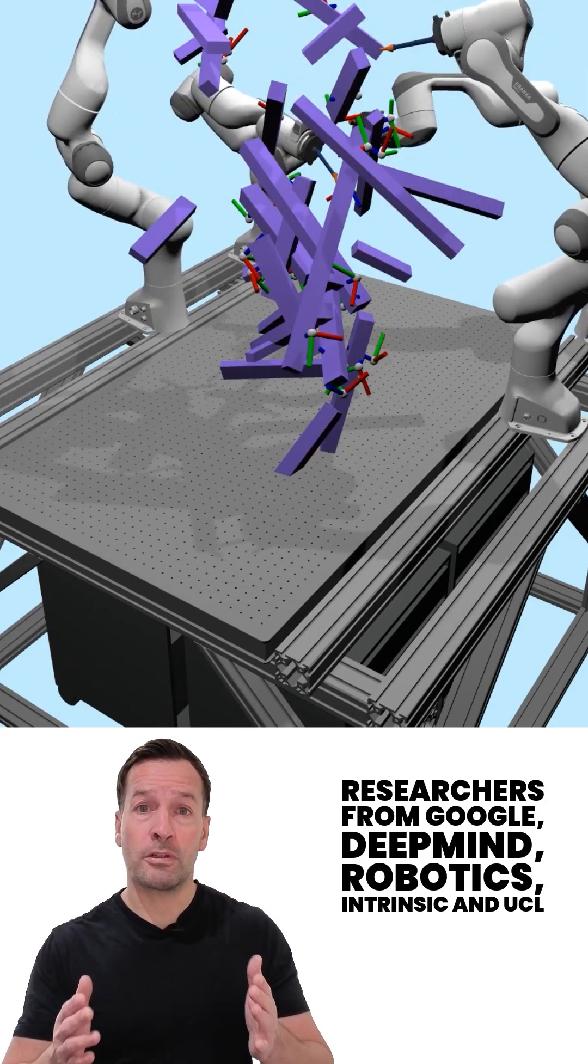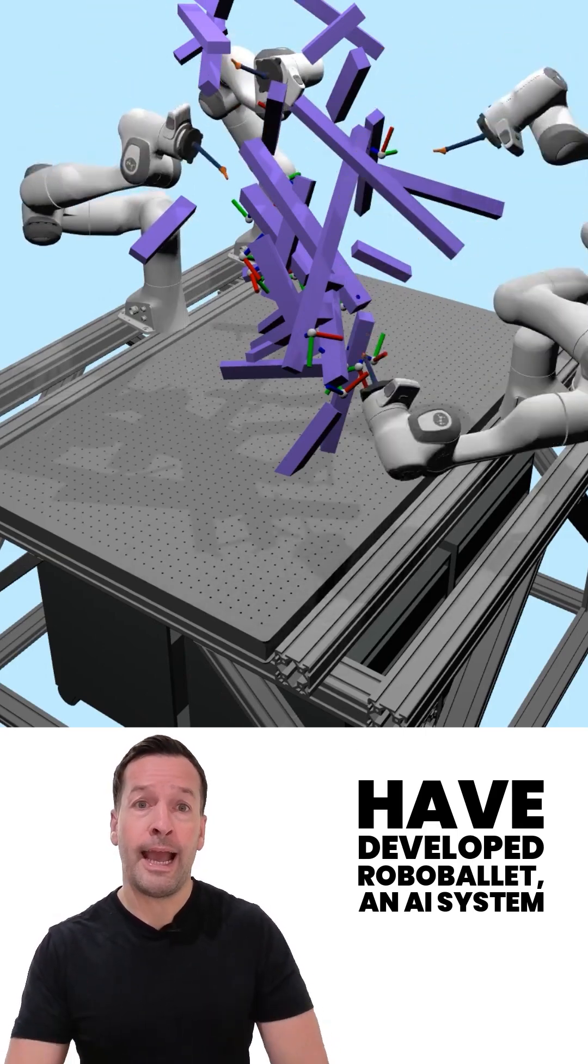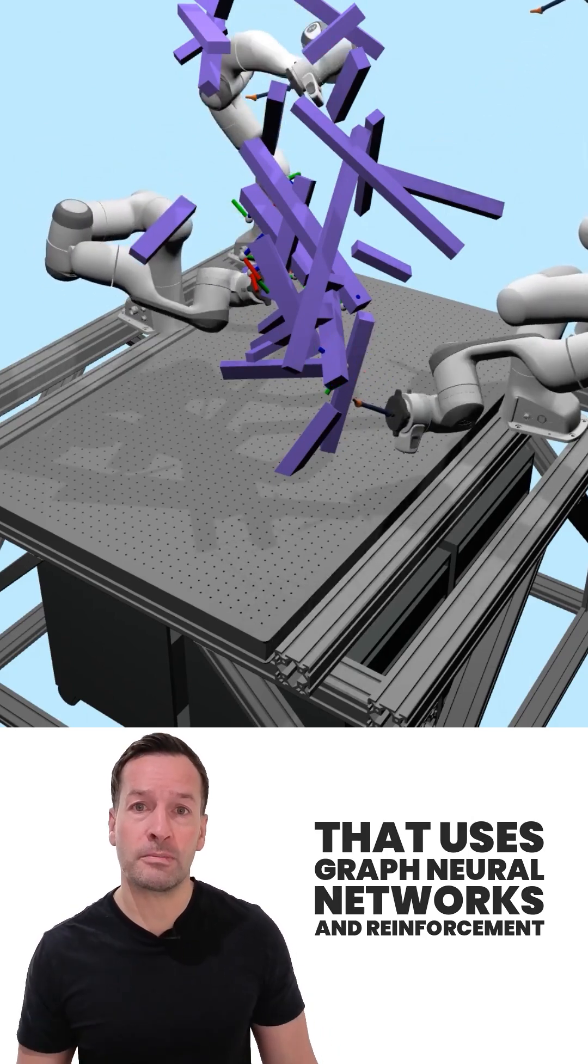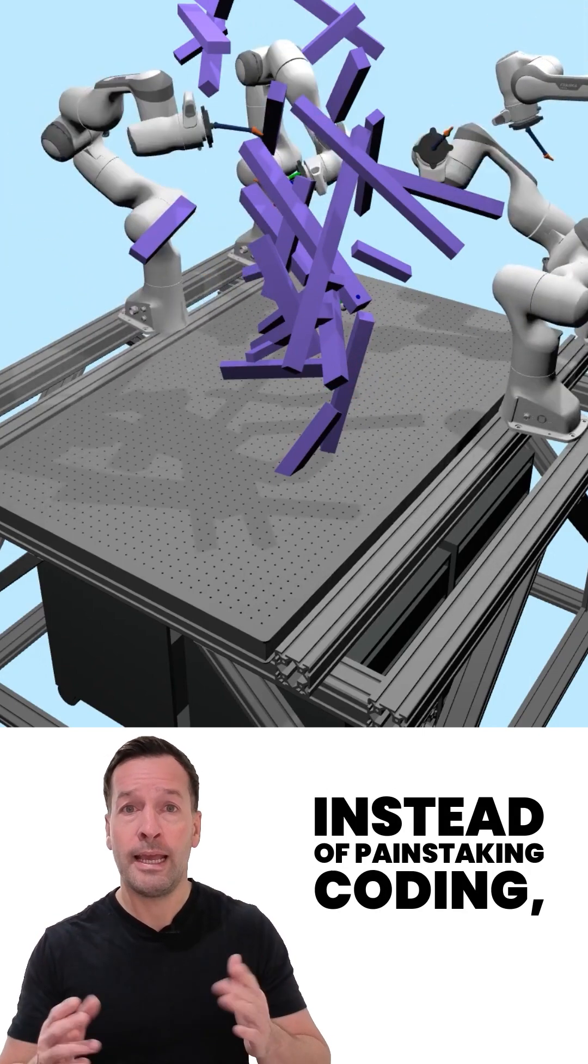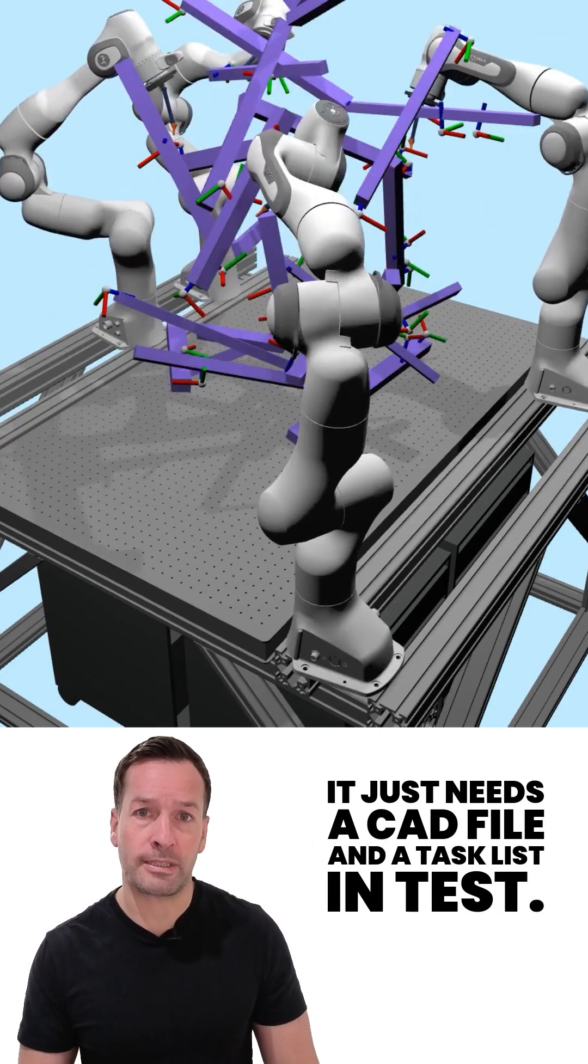Researchers from Google DeepMind Robotics, Intrinsic and UCL have developed Robot Ballet, an AI system that uses graph neural networks and reinforcement learning to generate collision-free plans for multiple robots. Instead of painstaking coding, it just needs a CAD file and a task list.